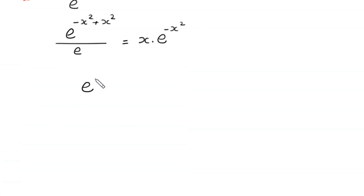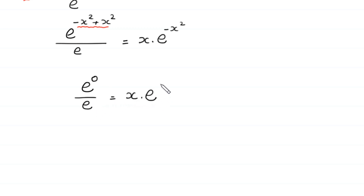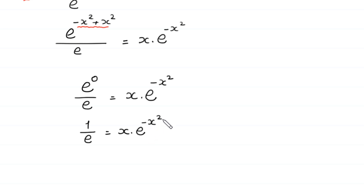Next, e to the power negative x squared plus x squared equals e to the power 0, which is 1. So we get 1 over e is equal to x times e to the power negative x squared. Rearranging, x times e to the power negative x squared is equal to 1 over e.